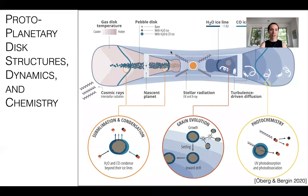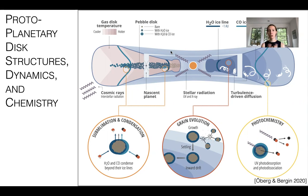Protoplanetary disks, the birthplace of planets, are complicated because there are so many things interacting with one another. The structure, the dynamics—both the gas and the dust—and their structures and dynamics are coupled, and the chemistry all interact with one another in different ways. We'll be coming back to this cartoon a couple of times in this talk, just to guide you.